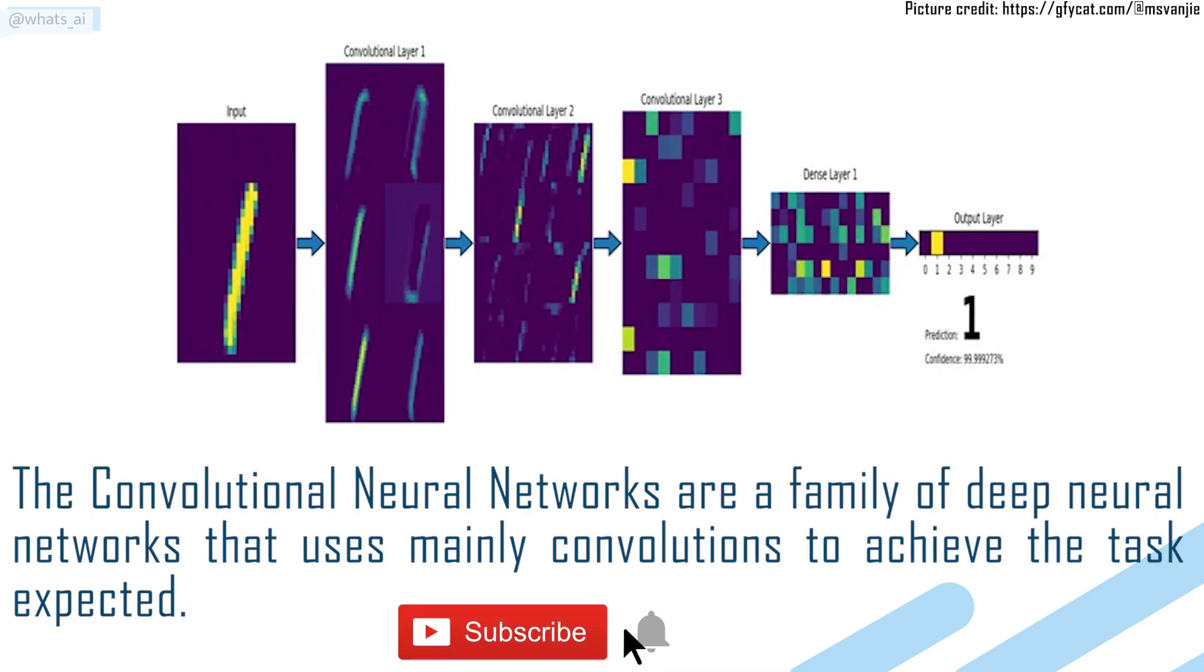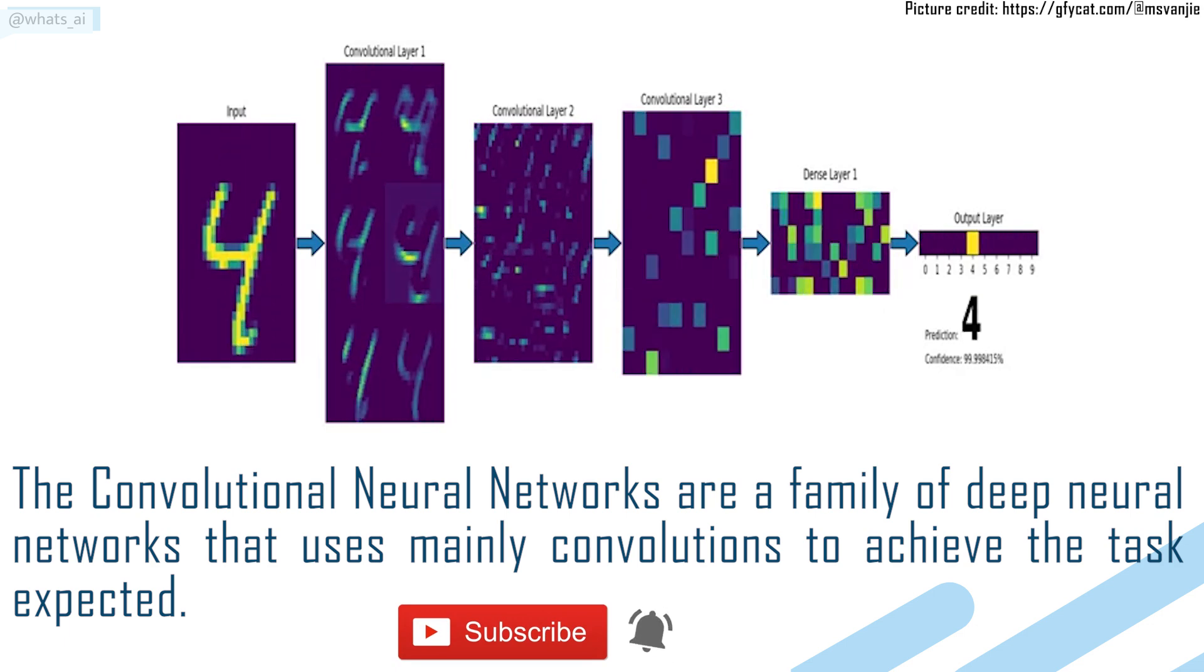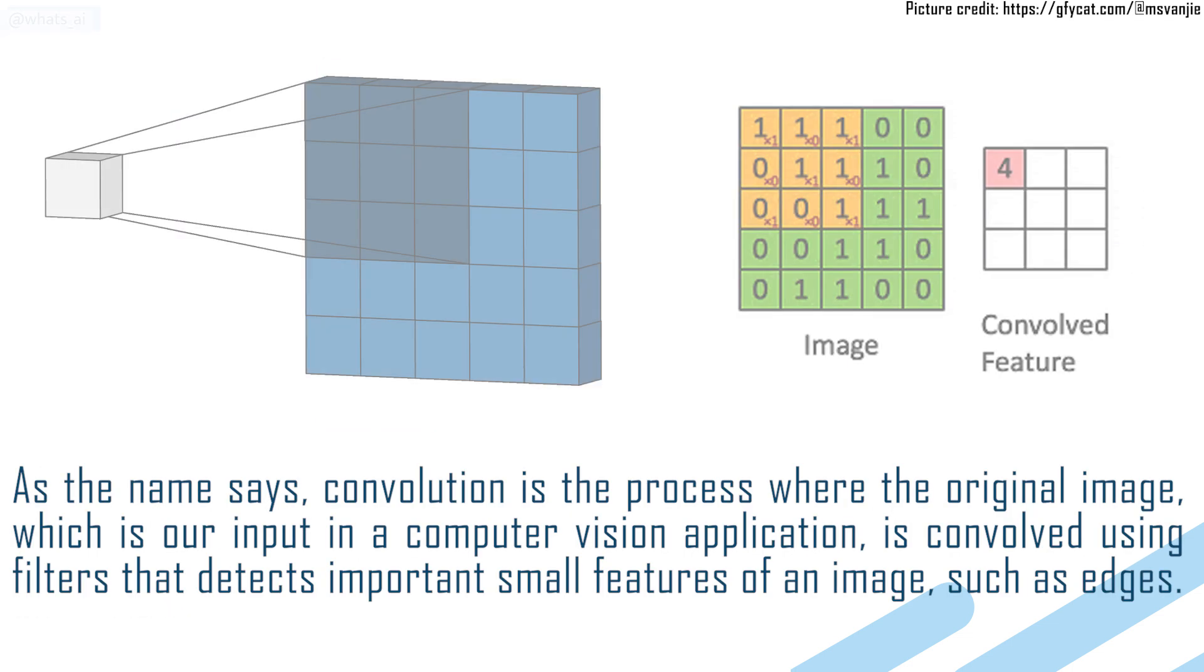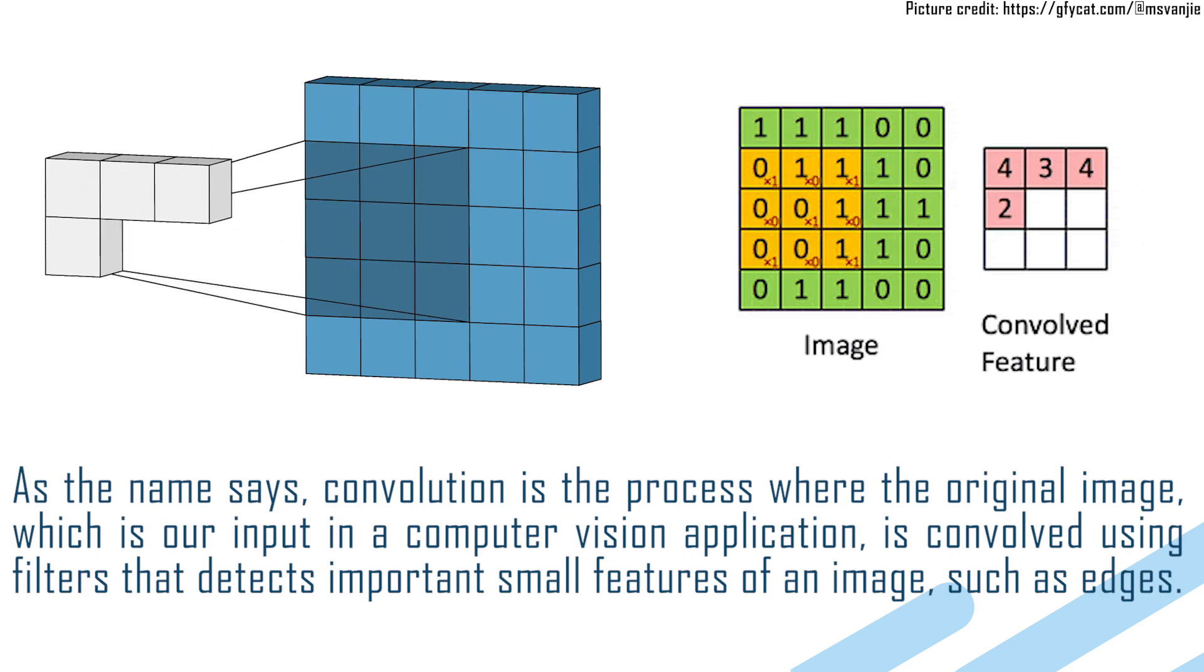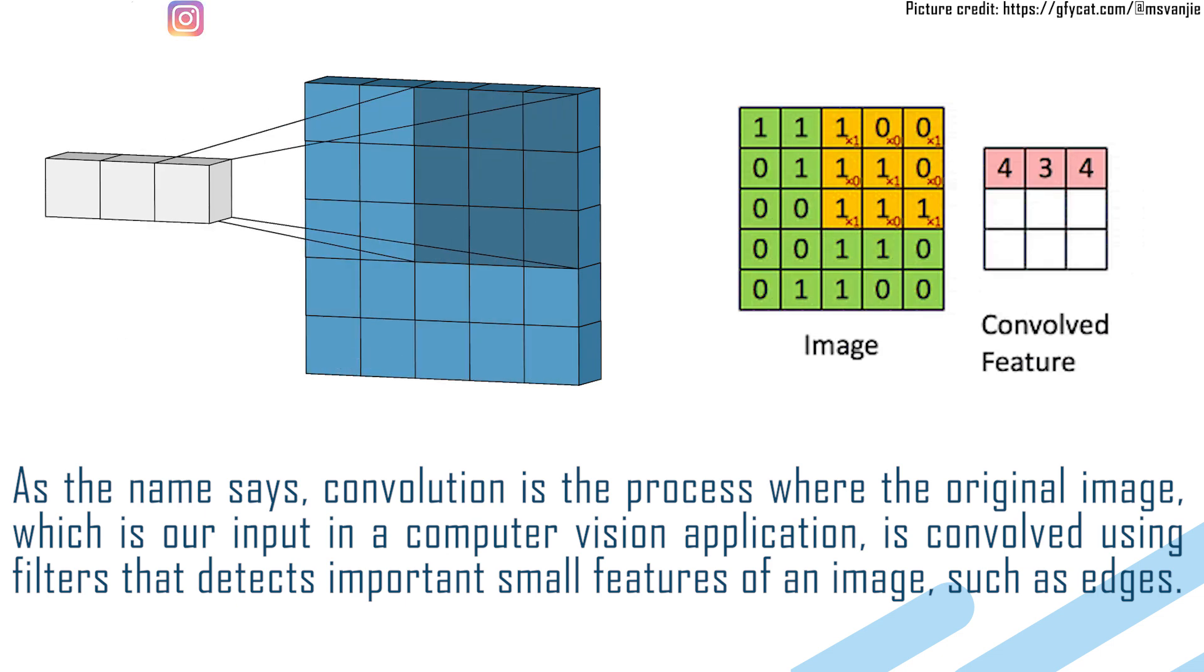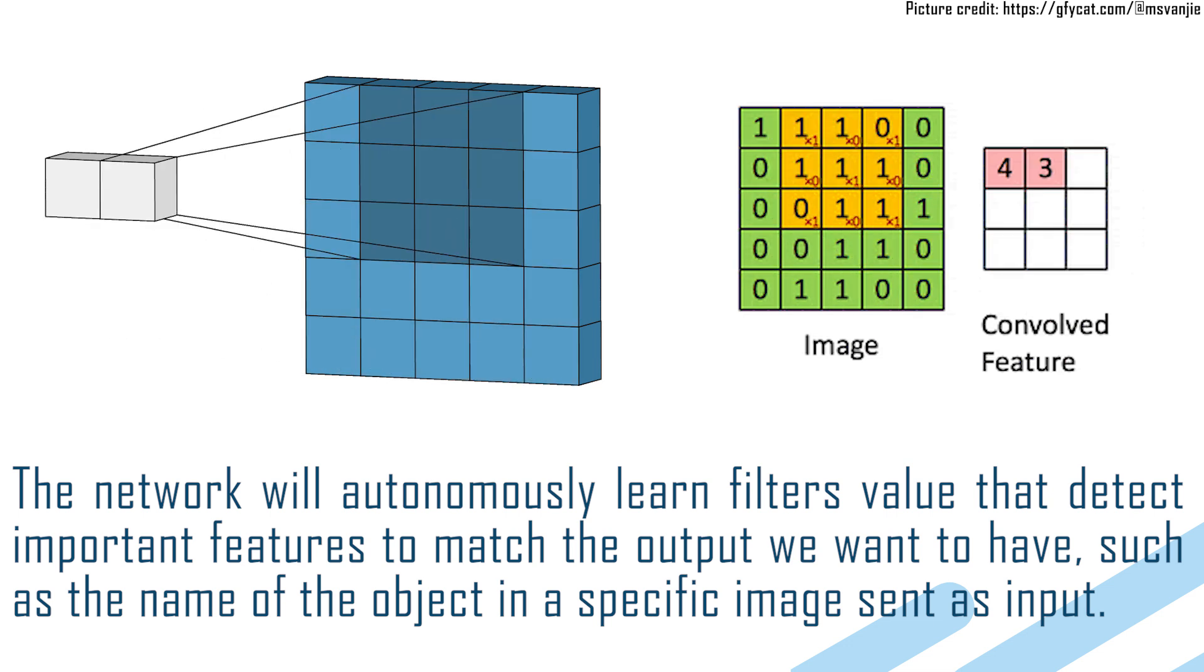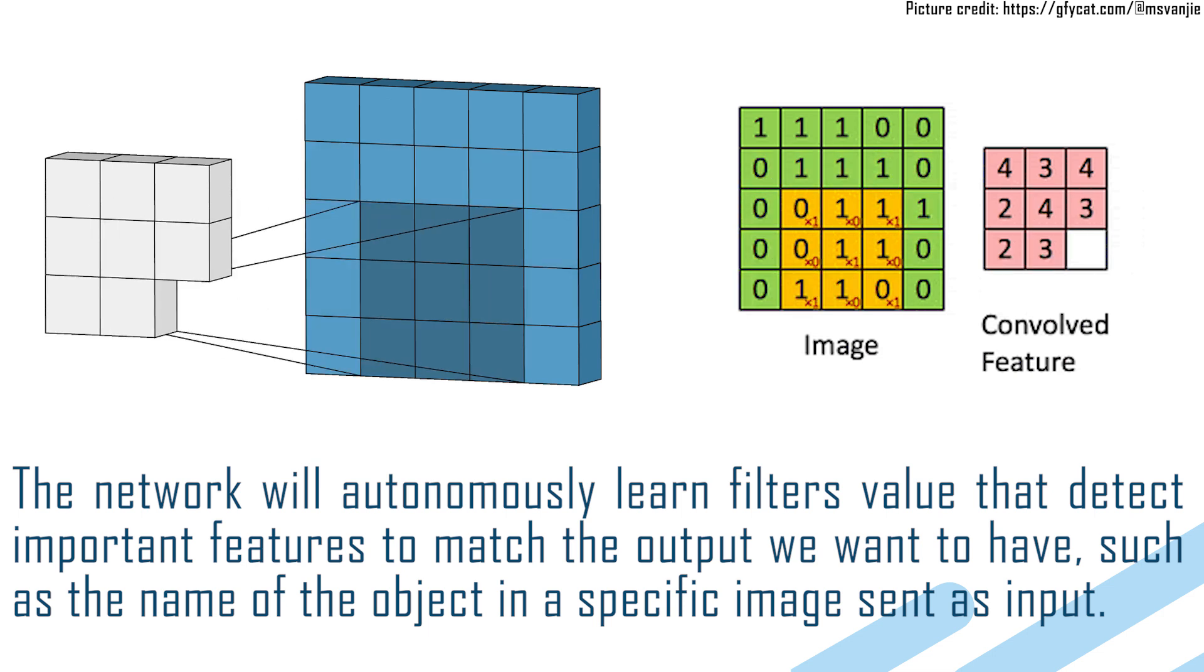Convolutional neural networks are a family of deep neural networks that use mainly convolutions to achieve the task expected. As the name says, convolution is the process where the original image, which is our input in a computer vision application, is convolved using filters that detect important small features of an image, such as edges. The network will autonomously learn filter values that detect important features to match the output we want to have, such as the name of the object in a specific image sent as input.